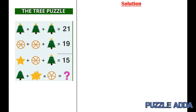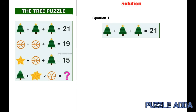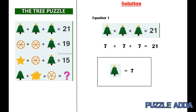In the first equation we have a tree with star plus a tree with star plus a tree with star, which is equal to 21. So we can say a tree with star is equal to 7.